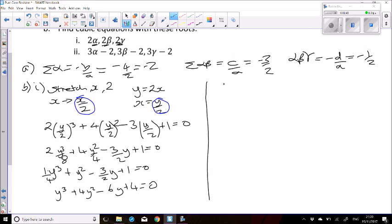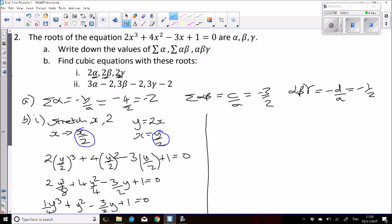The other method is to look at what happens to the sum, the sum in pairs, and the product of the roots. So the new sum is 2 alpha plus 2 beta plus 2 gamma. That's the same as 2 times alpha plus beta plus gamma. We already know what alpha plus beta plus gamma is, so that's 2 times negative 2, which is negative 4.